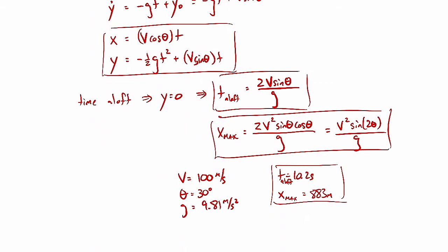To maximize range for a given velocity, we need to maximize sin2θ. Since sine reaches its maximum value of 1 when the argument is 90°, we need 2θ = 90°, so θ = 45° gives maximum range. You can see that very obviously from the formula — something you'd never get just from a table of numbers.